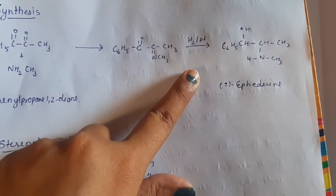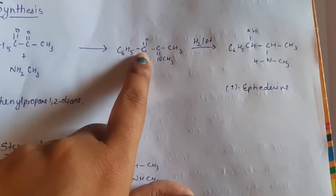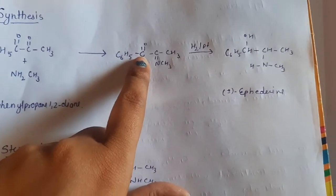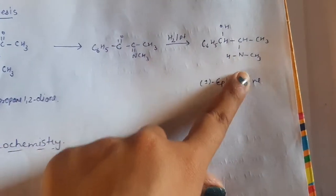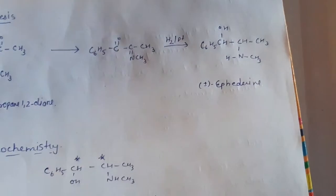On catalytic reduction this double bond gets reduced so it will change into NH group and it will change into hydroxyl group to CHOH here NHCH3 and here ephedrine gets synthesized.